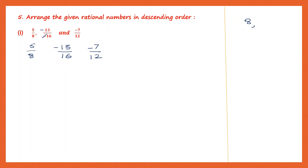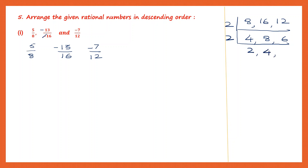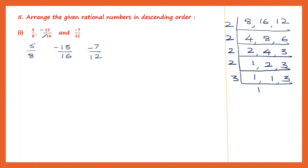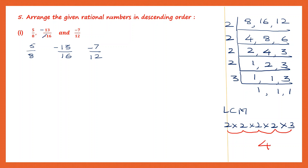All denominators are now positive but different, so we find the LCM of 8, 16 and 12 using 2. 2 fours are 8, 2 eights are 16, 2 sixes are 12. Continue with 2: 2 twos are 4, 2 fours are 8, 2 threes are 6. Again with 2: 2 ones are 2, 2 twos are 4, bring down 3. Continue with 2: giving 1, 1 and 3. Now use 3: 1 and 3 ones are 3. LCM is 2 into 2 into 2 into 2 into 3 — that is 16 threes are 48.